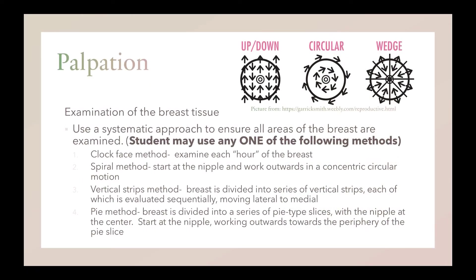For the examination of the breast tissue, use a systematic approach to ensure all areas of the breast are examined. You can use any of the following methods: the clock face method, spiral method, vertical strips method, or the pie method. For the purpose of this OSCE, we will use the spiral method.